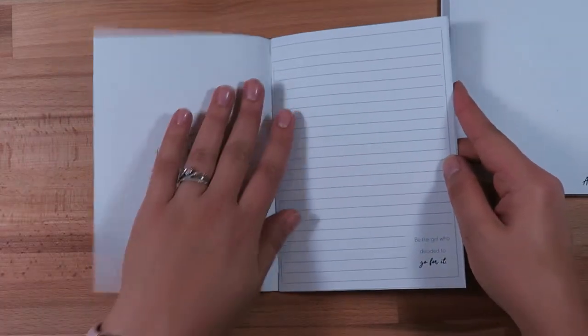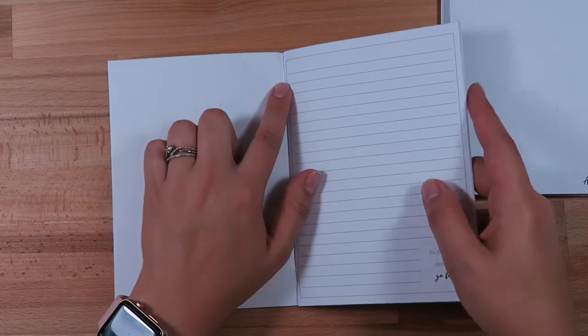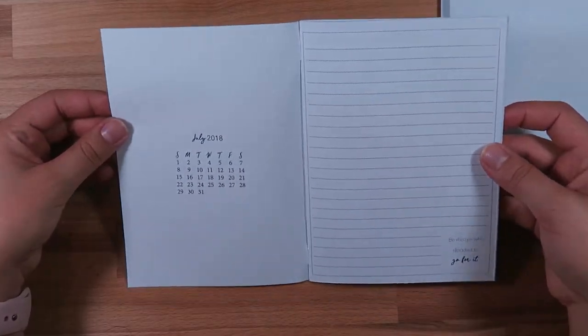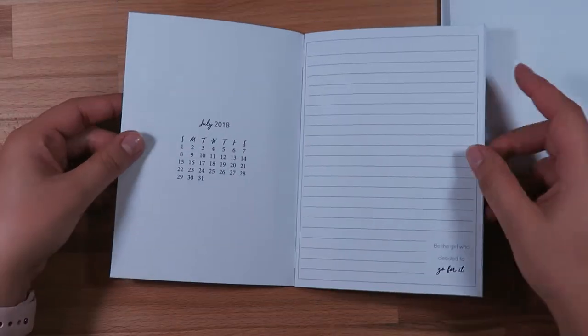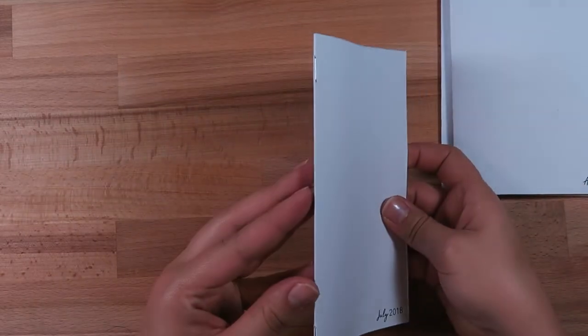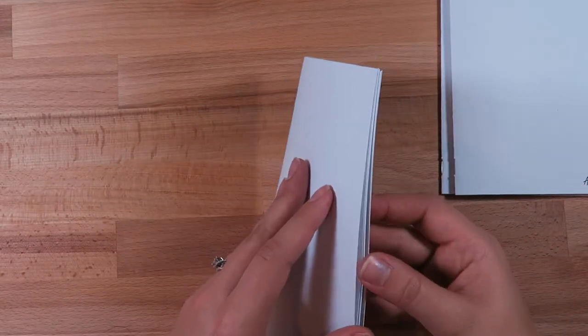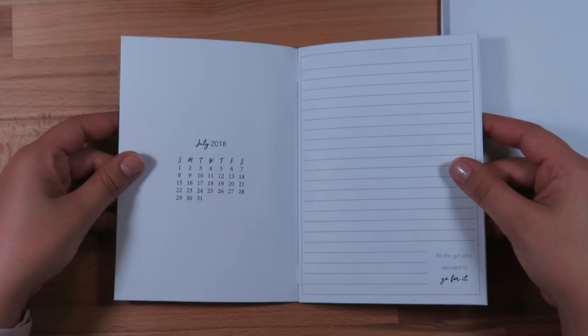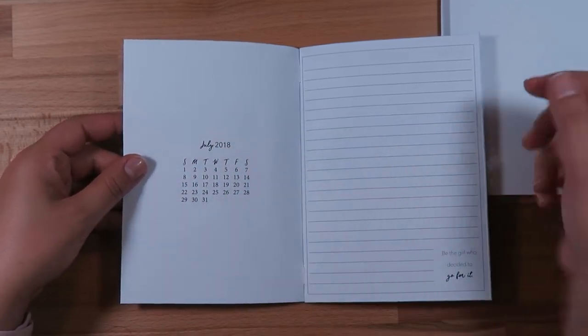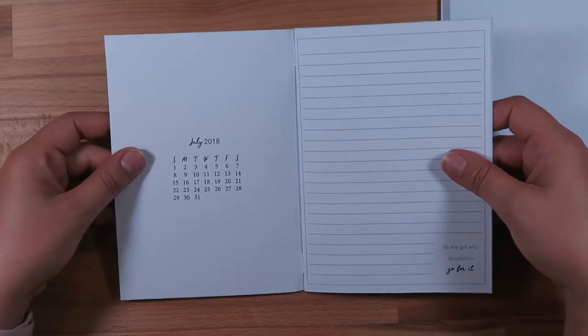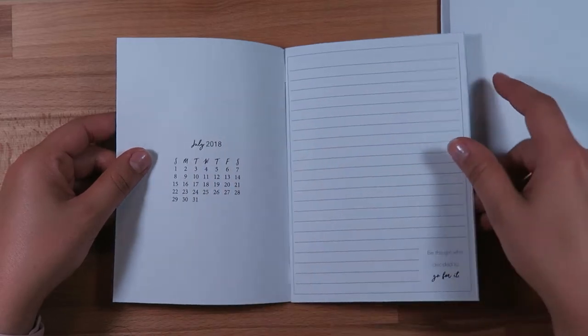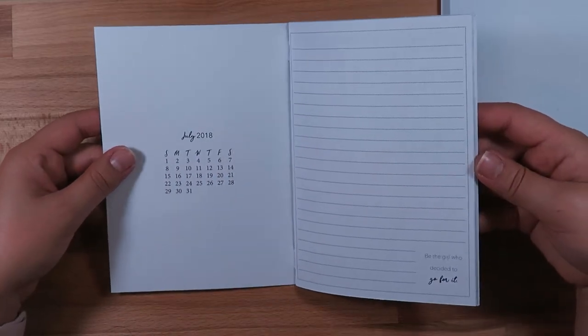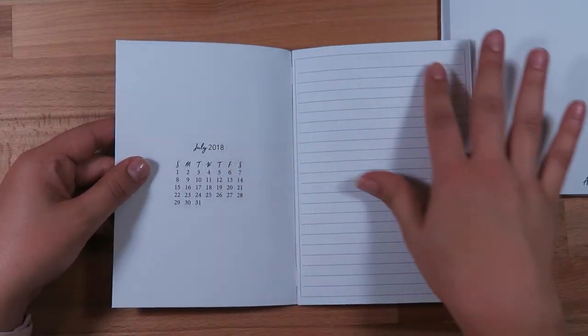I will do a quick flip through to show you what it looks like. On the first page, these I bound with two staples. I am also going to show you how to do that in just a moment.